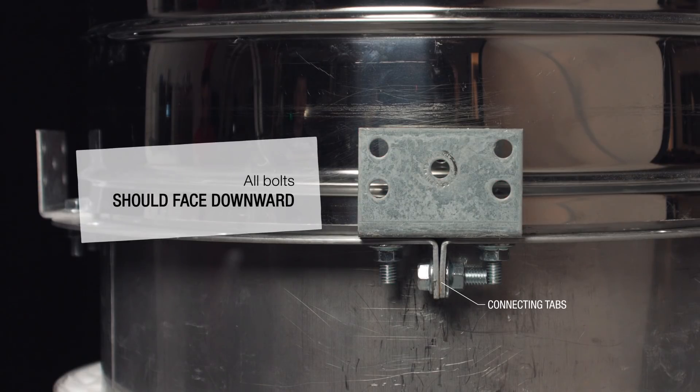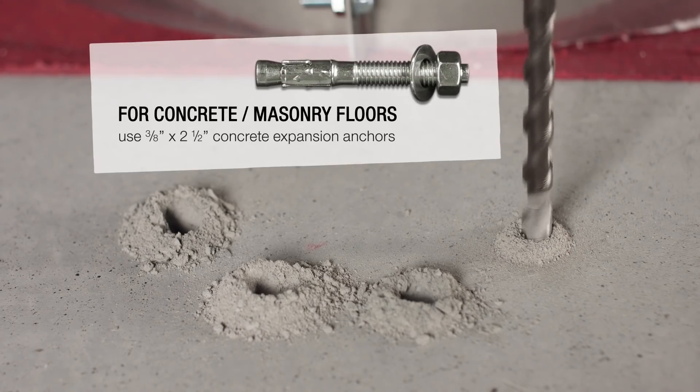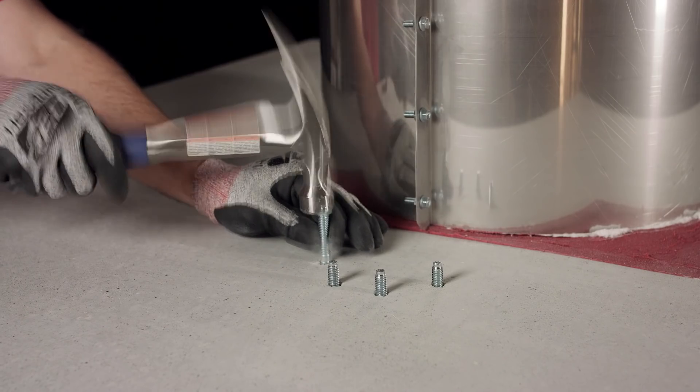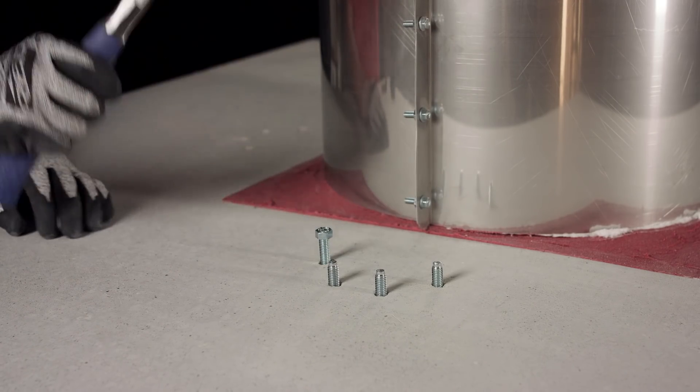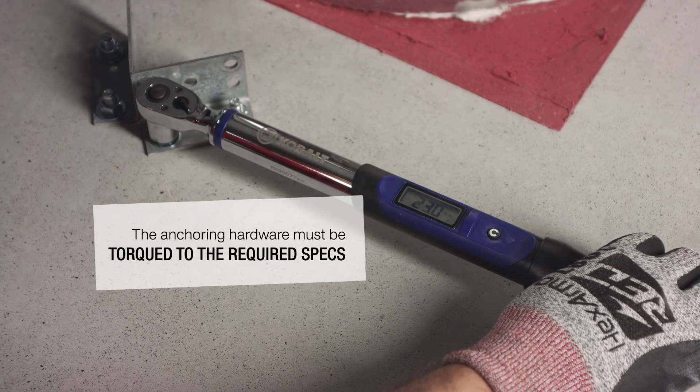Note that all bolts should be facing downward. Using the marks you created earlier, install the brackets using the specified hardware for your floor or ceiling type. You must ensure the bracket hardware is torqued the proper amount.